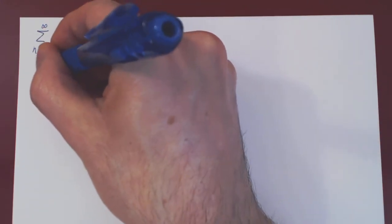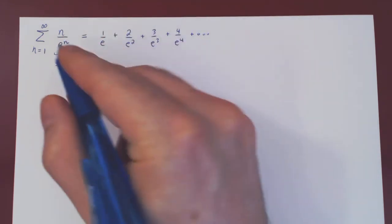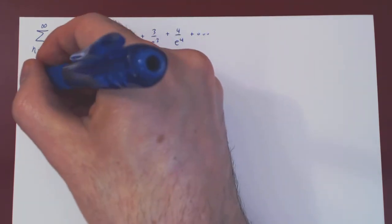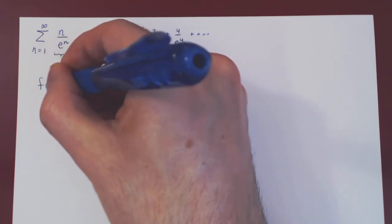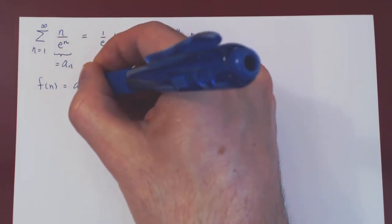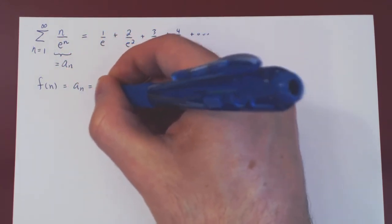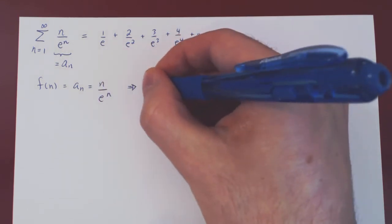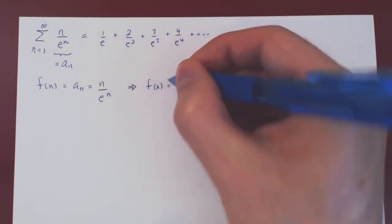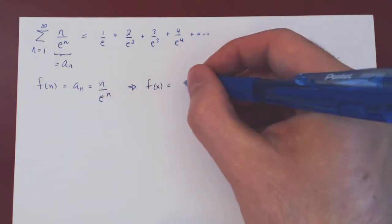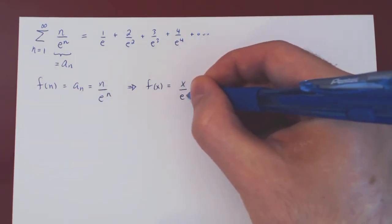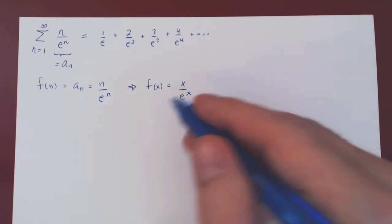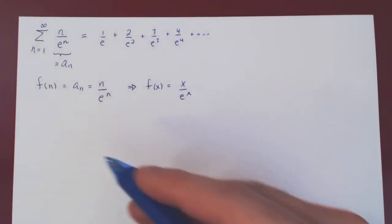We are summing the terms of the sequence a_n, where a_n equals n over e to the n. We need our function f(n) to equal a_n, which is simply n over e to the n. So then f(x), replacing n by x, is x over e to the x. And we are considering the series from 1 to infinity.